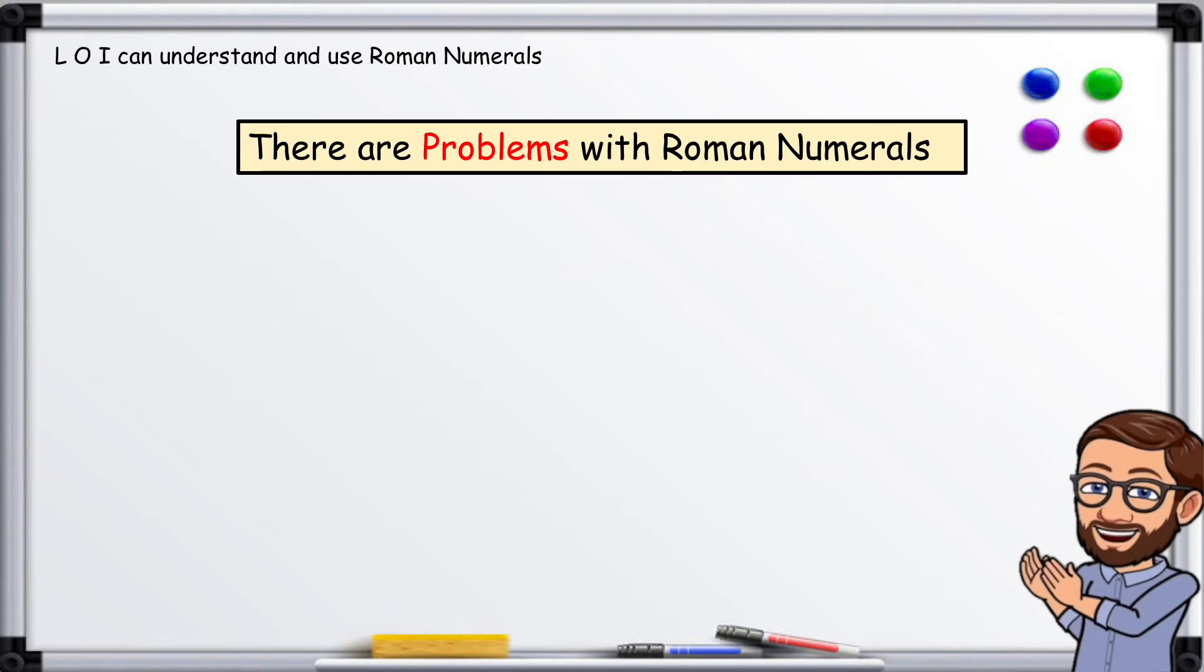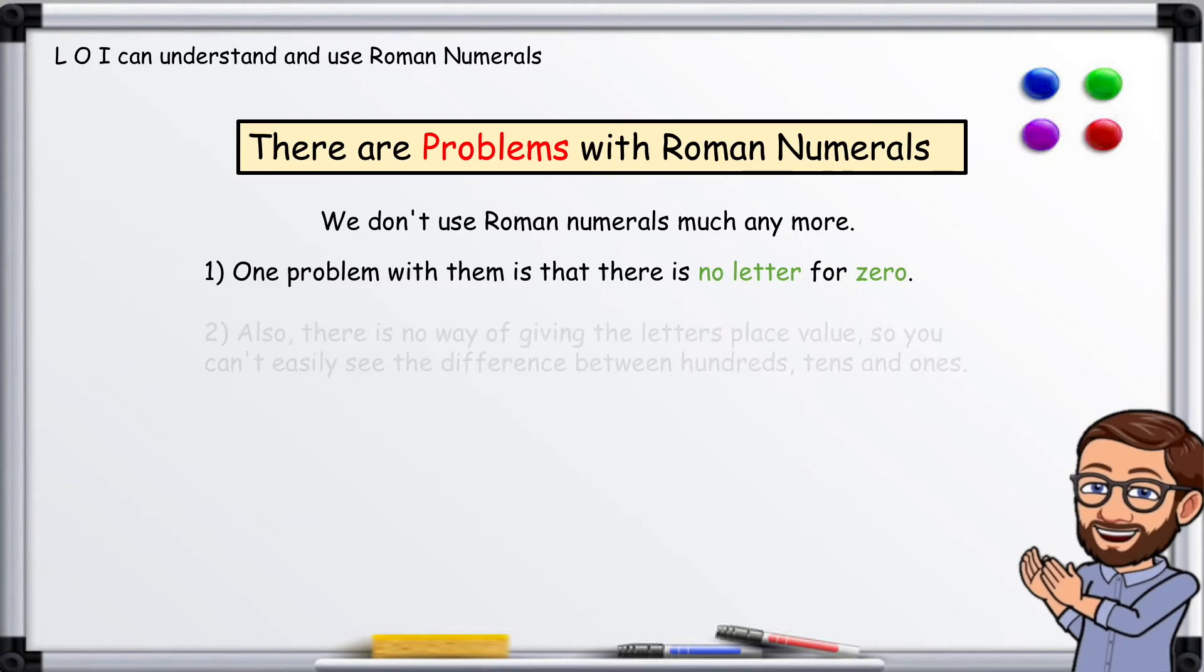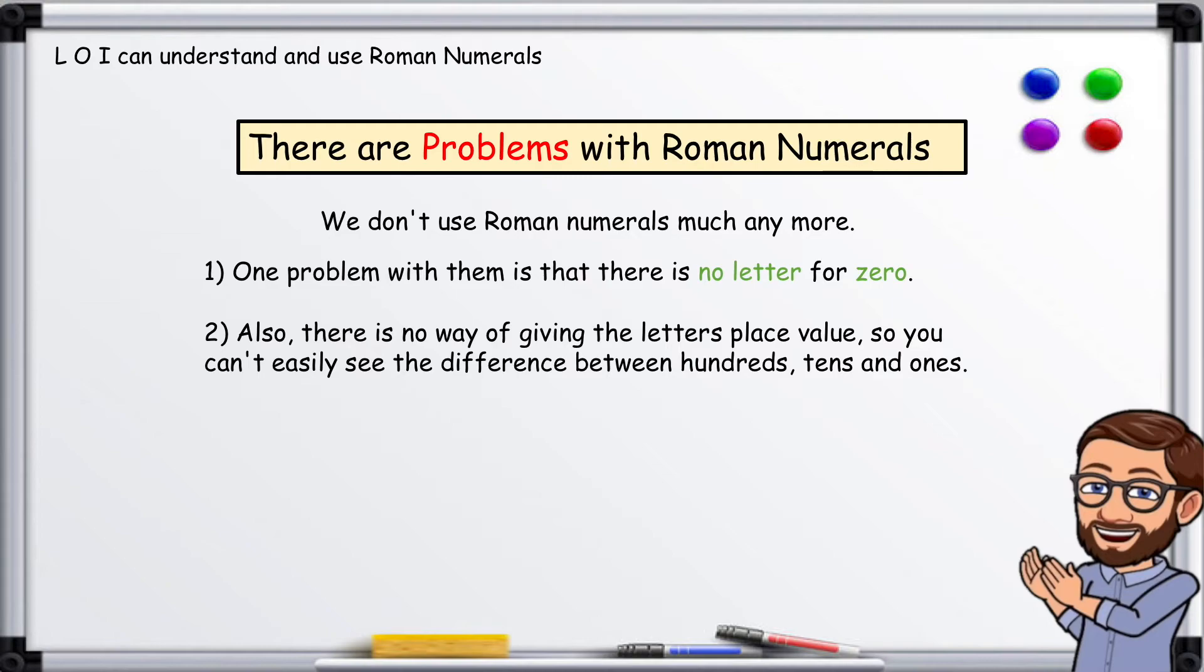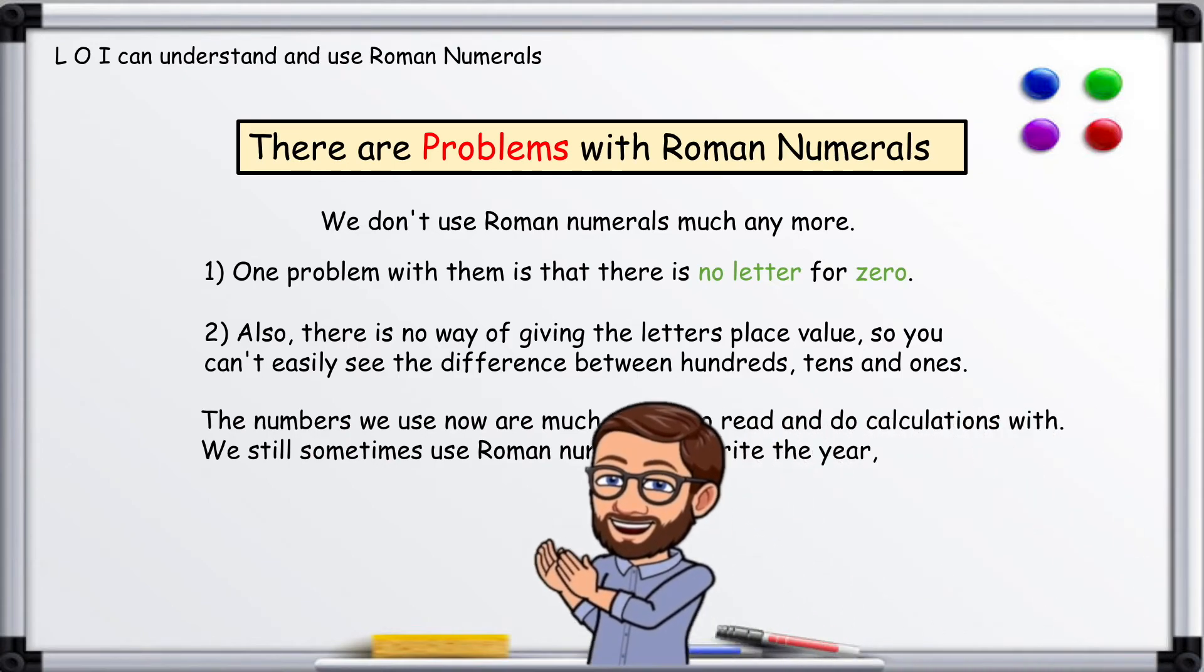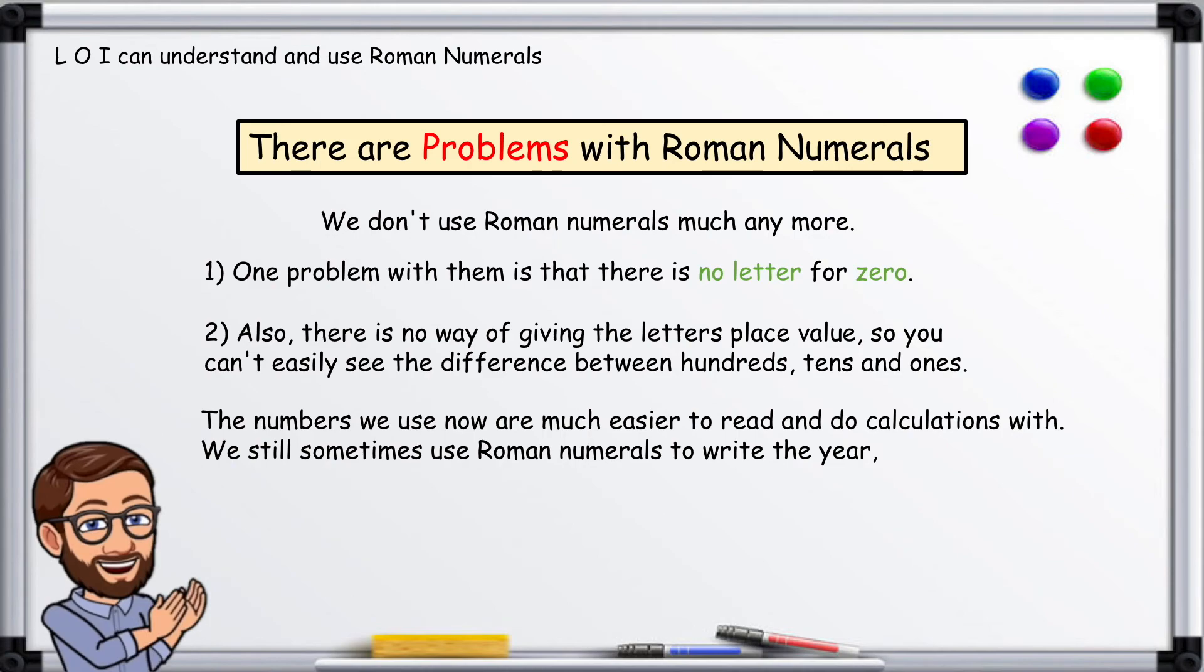There are problems with Roman numerals. We don't use Roman numerals much anymore. One problem with them is that there is no letter for zero. Also, there is no way of giving the letters place value, so you can't easily see the difference between hundreds, tens and ones.